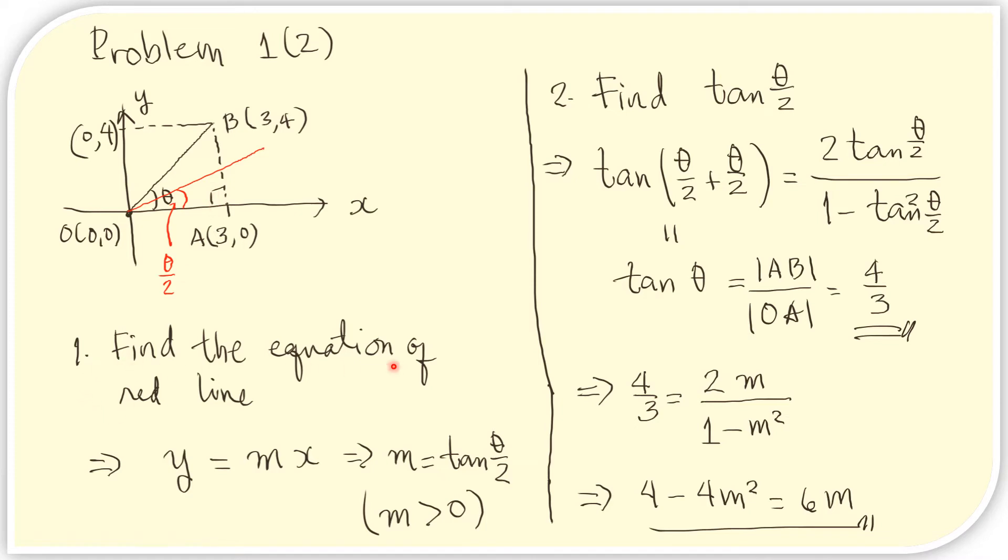Now first, let us find the equation of the red line. The problem also gives the equation of the red line, which is y equals blank x. Let us call the blank m. This is the slope of the red line. Conveniently, the slope of any line is equal to the tangent of the angle that it makes with the positive x-axis.